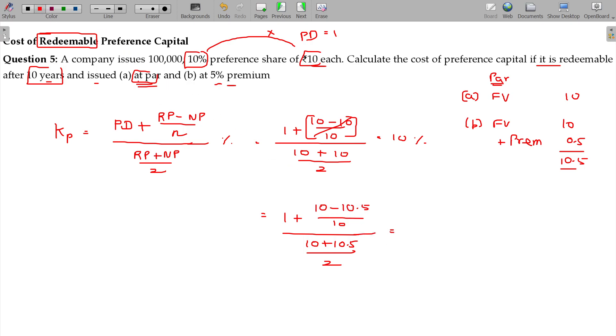10 minus 10.5, that's negative 0.5 divided by 10, amortized over 10 years. Then the answer should be less than 10: 9.27 percent. Am I right? Clear?